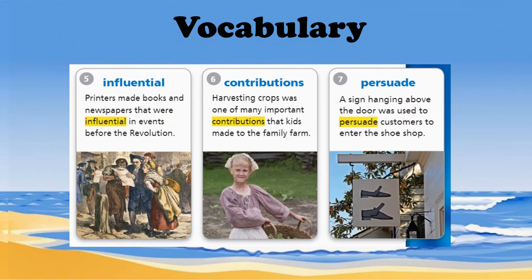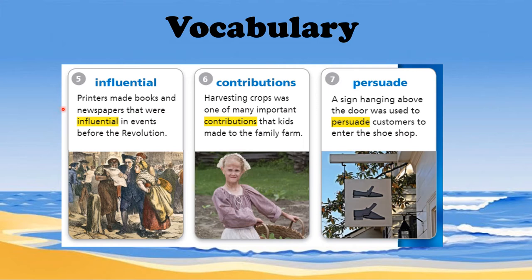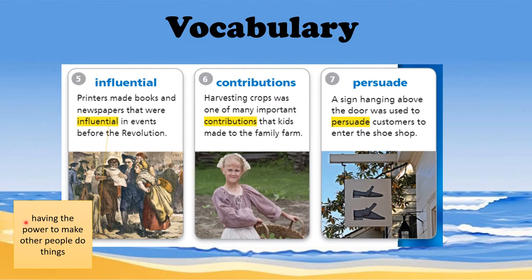Number five, we have influential. Printers made books and newspapers that were influential in events before the revolution. Taking the root word influence — to influence someone is to persuade or convince someone. So influential means having the power to make other people do things or to make people think about things a certain way.